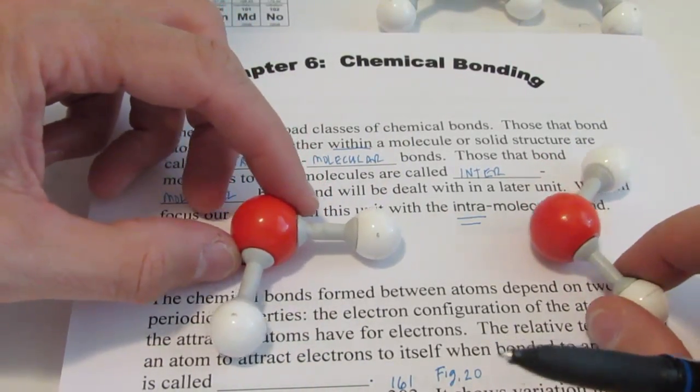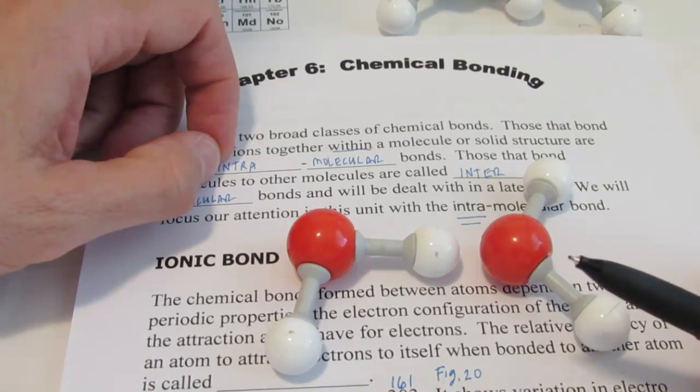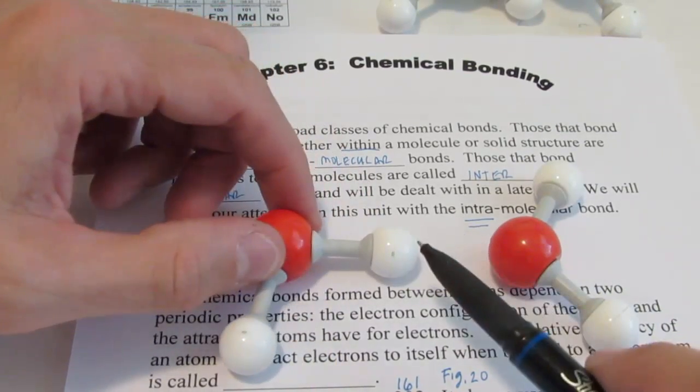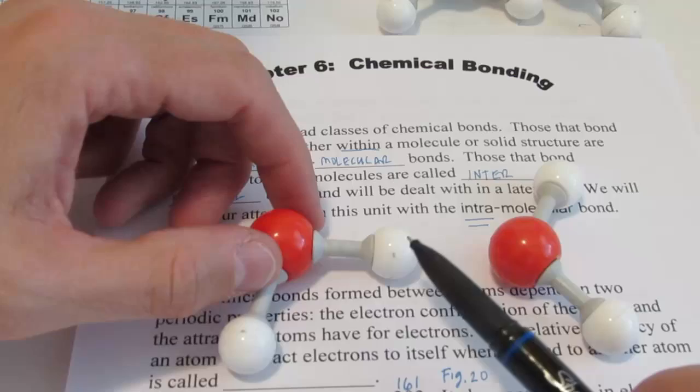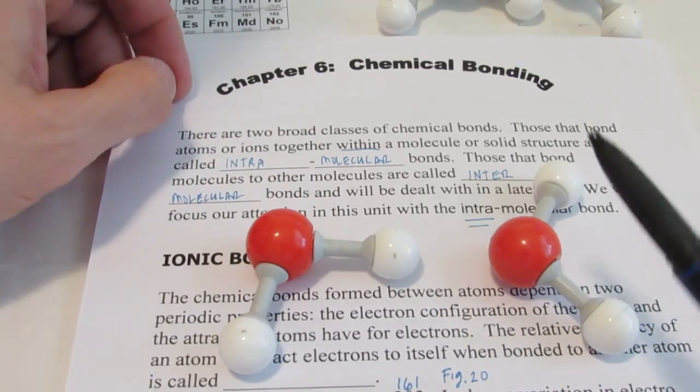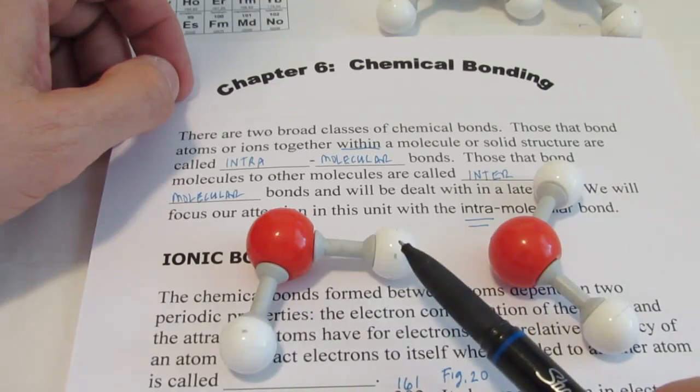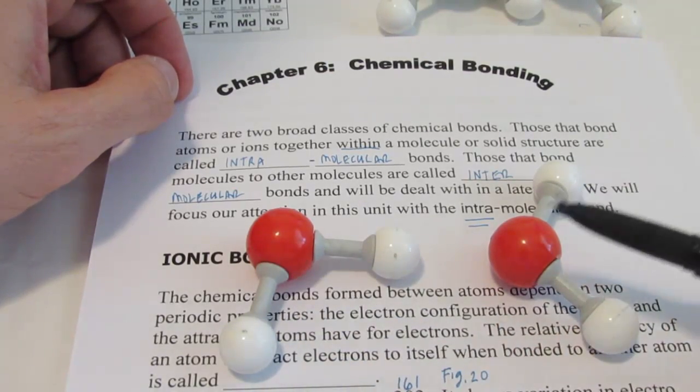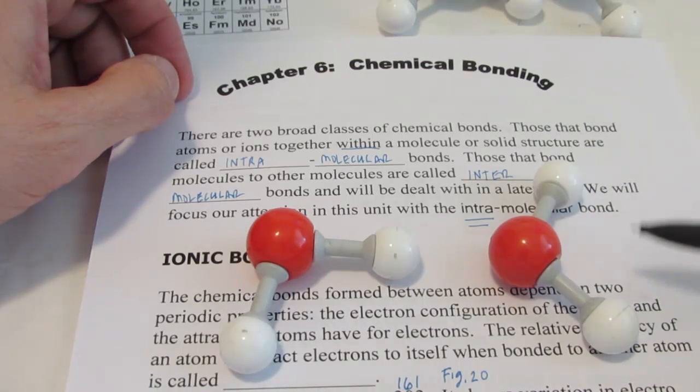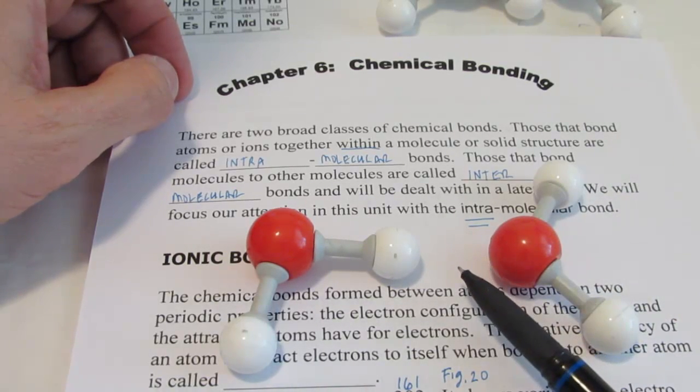they are going to be attracted to each other like two magnets would. The force of attraction between two separate molecules is called the intermolecular bond. When this hydrogen from this water molecule is attracted to this oxygen in a totally separate molecule, we call that an intermolecular bond.